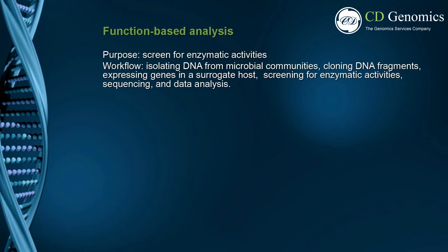Functional metagenomics studies the functions of encoded proteins. Functional metagenomics involves isolating DNA from microbial communities, cloning DNA fragments, expressing genes in a surrogate host, screening for enzymatic activities, sequencing, and functional analysis. When it comes to the construction of a metagenomic library, cosmid or phosmid-based libraries are often preferred due to their large and consistent insert size and high cloning efficiency.